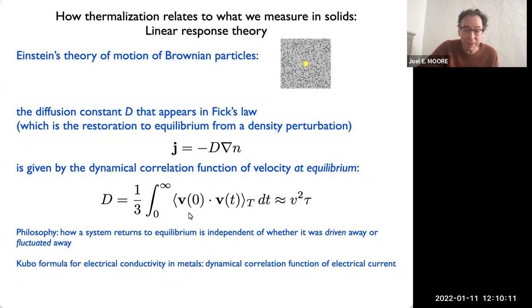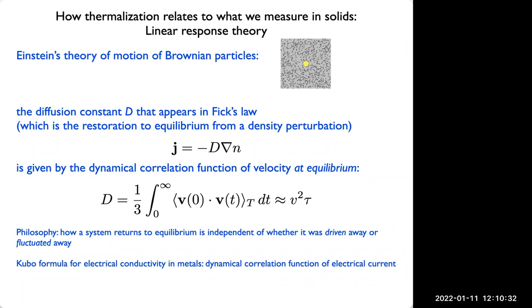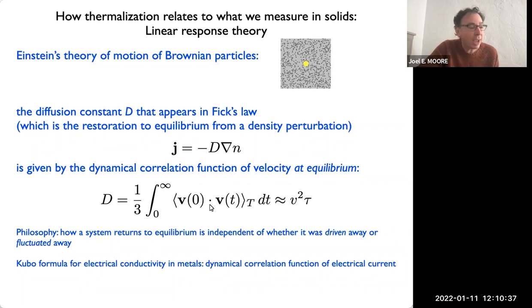If you ask what is the magnitude of this diffusion constant, it turns out that even though this is a restoration of equilibrium at linear order from a perturbation, it's given by an equilibrium dynamical correlation function of the velocity of the heavy particle. If the heavy particle remembers its velocity for a long time — loses its velocity only slowly to the bath — then you will get a large diffusion constant. If it decays rapidly, then you will get a small diffusion constant. So this is maybe the first example of something like a Kubo formula, where you can express a linear response coefficient in terms of a dynamical correlation function at equilibrium. The philosophical idea is: one way you could perturb a system from equilibrium is to drive it actively, but you could also perturb it just by letting it fluctuate — and when you have those fluctuations, the way that a system responds to return to equilibrium doesn't actually care very much about whether you pushed it away or whether it fluctuated away. That's the fluctuation-dissipation idea.